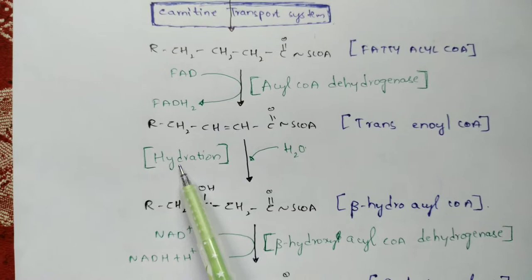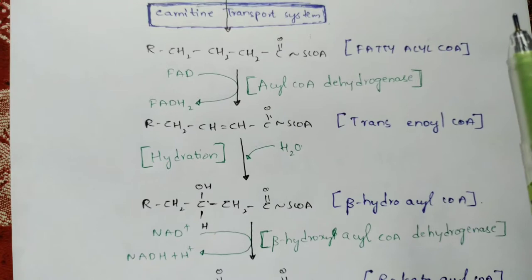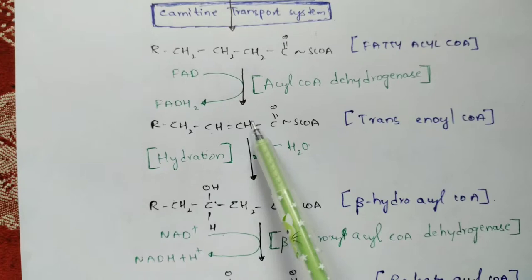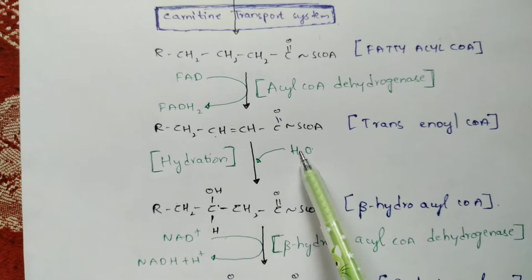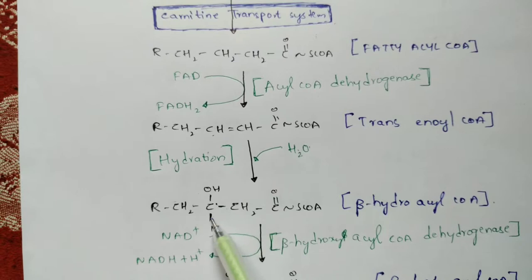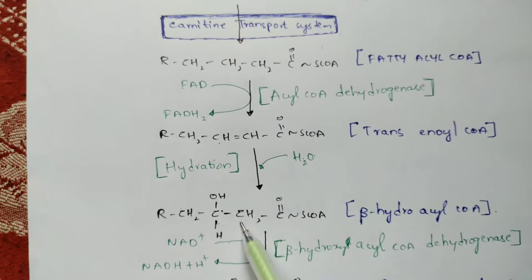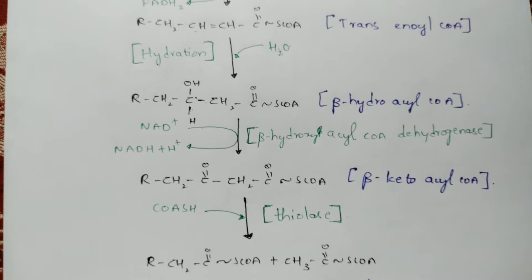Trans-enoyl-CoA then undergoes hydration — a water molecule is utilized. One OH group gets attached to one carbon and one H gets attached to the adjacent carbon, forming beta-hydroxyacyl-CoA. The remaining structure stays the same.